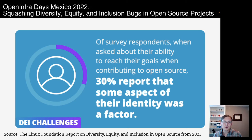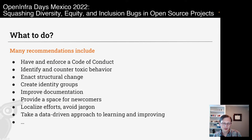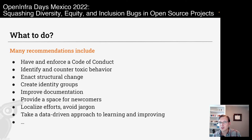There are several recommendations for what we can do. One is to have and enforce a code of conduct — a document that says here is how we expect people to behave when participating in our project: be kind, be open, don't use offensive language. When we identify toxic behavior, we are committed to countering it. Most times people don't even know what they said was offensive, or it was in the heat of the moment — they can apologize and it's all good.